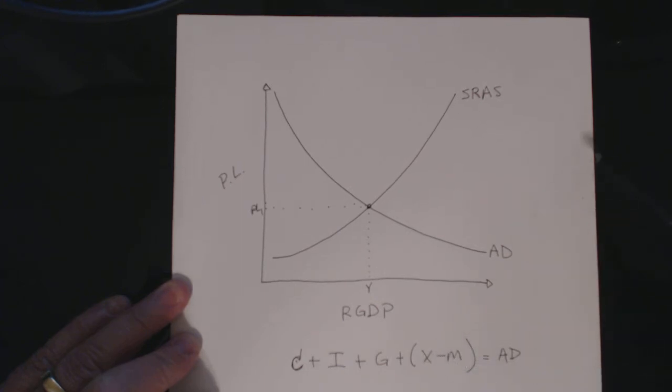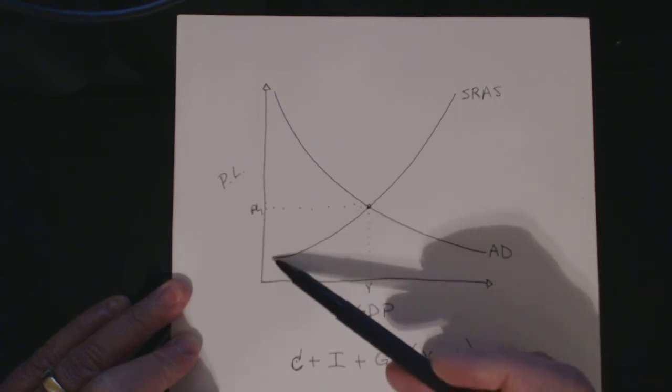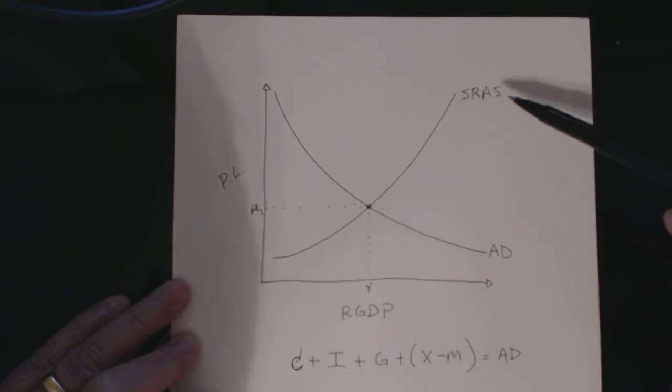And then this upward sloping curve would represent short-run aggregate supply.